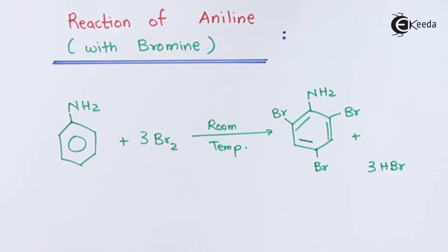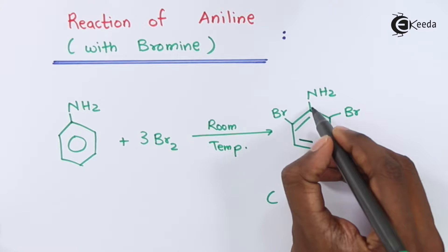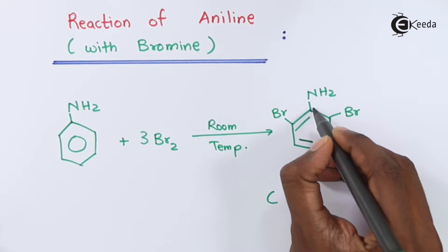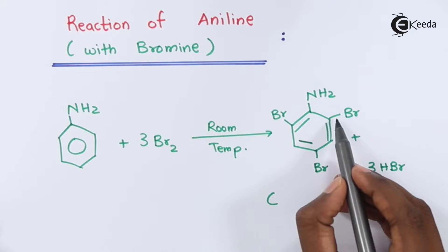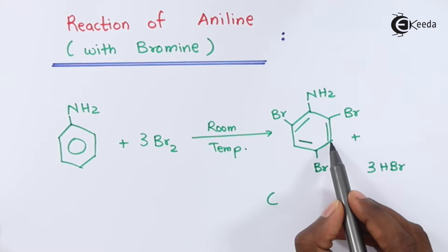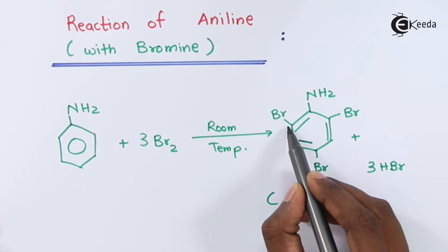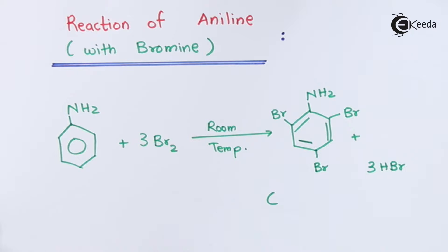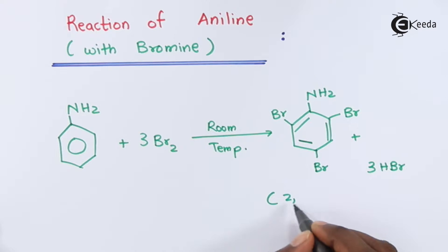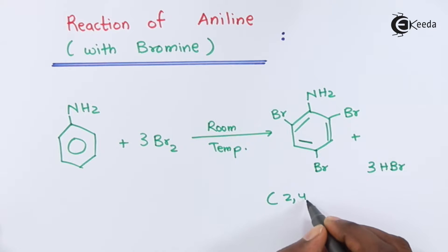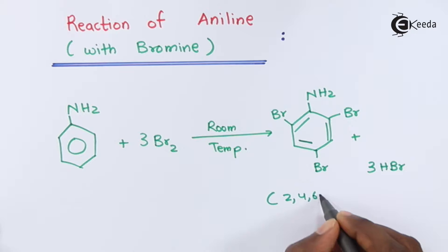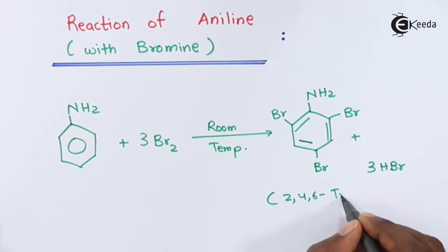Looking at the product: if this is carbon number one, two, three, four, five, and six, the product we have obtained is 2,4,6-tribromoaniline.